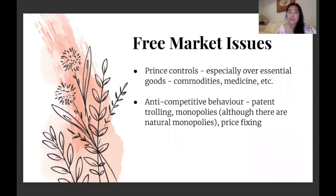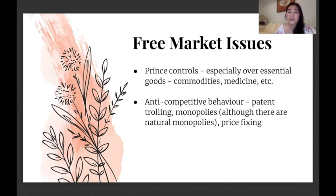Some issues with a free market are with price controls, especially with things deemed as commodities like water, food, or medicine — especially now with a COVID-19 vaccine, for example. It also has to do with anti-competitive behavior like patent controlling or monopolies, although there are cases of natural monopolies where it's just more efficient for one company to handle it — like grid lines for electricity, or Meralco in Metro Manila. The next would be price fixing, where companies collude to keep prices up so that people have no choice but to buy at that price.